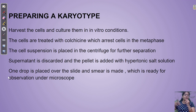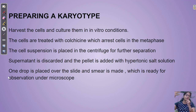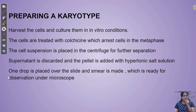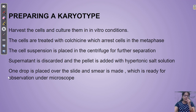The cell suspension is then centrifuged. Centrifugation gives you a pellet at the bottom and supernatant at the top. Remove the supernatant, take the pellet, and add hypotonic salt solutions to make it ready for smear preparation. This helps form cells under metaphase condition. When observed under a microscope connected to a computer, you get the perfect karyotype of your particular blood sample.